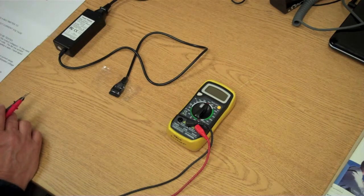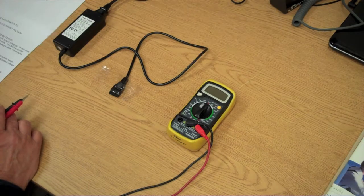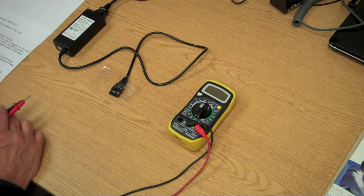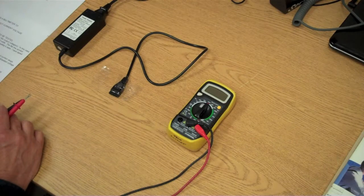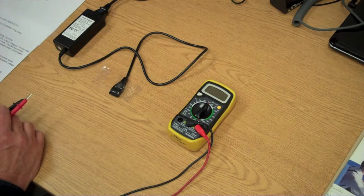One, read the output voltage of the item to be tested. Two, select appropriate scale on the meter. Three, place the meter probes on the correct contacts. And four, read the voltage.